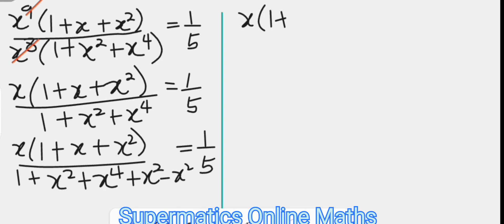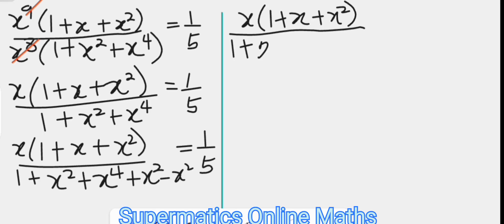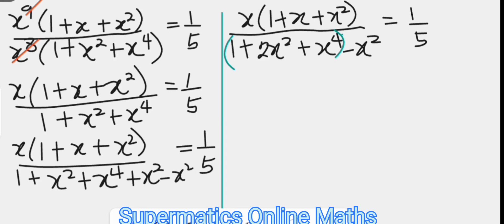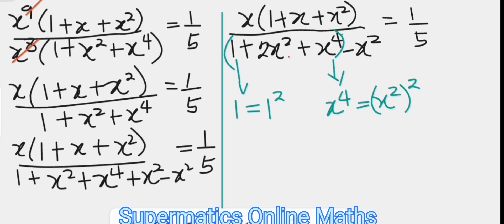So we now have x times (1 plus x plus x squared) over, in the denominator: 1 plus 2x squared plus x to the power of four, minus x squared, equal to one over five. Grouping this together, we know that 1 is the square of 1, x to the power of four is the square of x squared, and the middle term is twice the product of 1 and x squared — so 1 plus 2x squared plus x to the fourth factors as the perfect square (1 plus x squared) all squared.